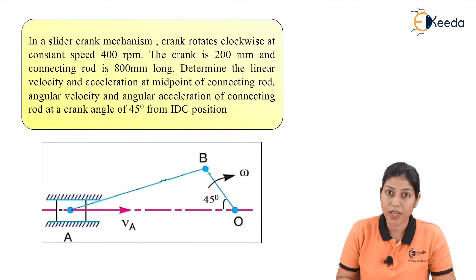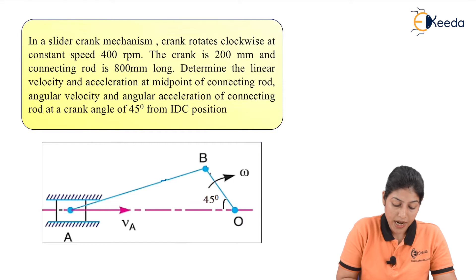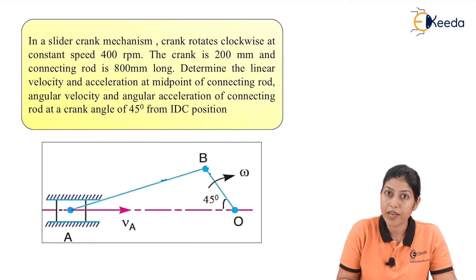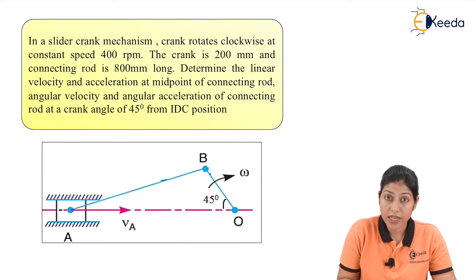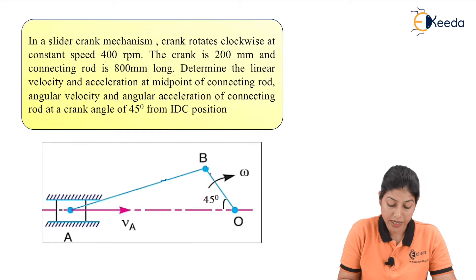The numerical is: in a slider crank mechanism, the crank rotates clockwise at constant speed 400 rpm. The crank is 200 mm and the connecting rod is 800 mm long. Determine the linear velocity and acceleration at the midpoint of the connecting rod, angular velocity and angular acceleration of the connecting rod at a crank angle of 45 degrees from the inner dead center position.